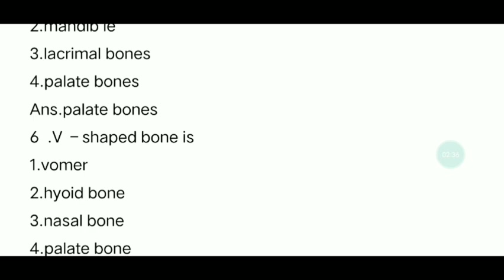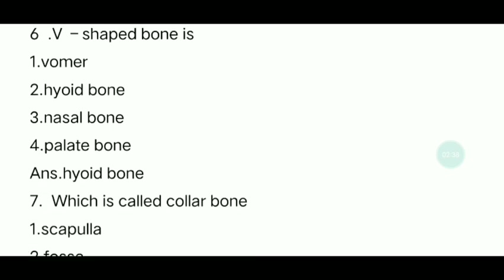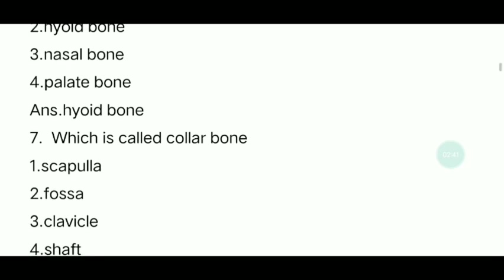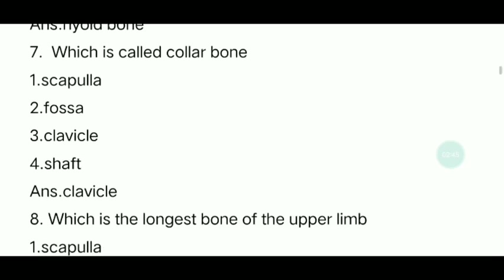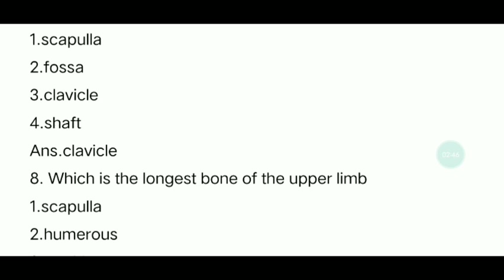Sixth question: Which is the V-shaped bone? The answer is the hyoid bone. Seventh question: Which bone is called the collar bone? The answer is the clavicle.